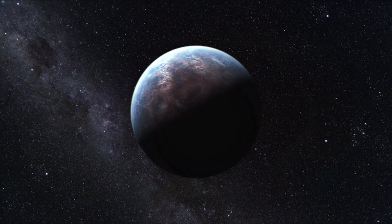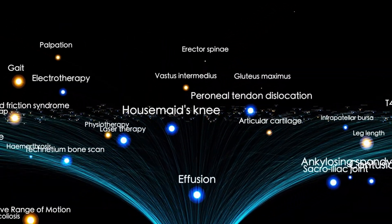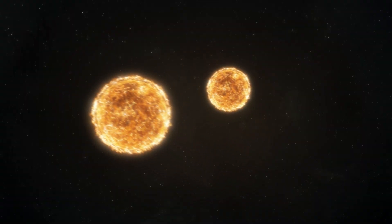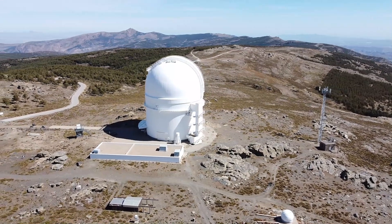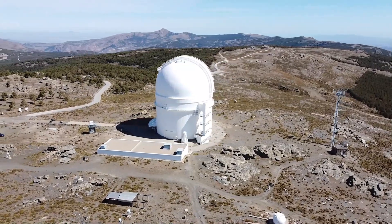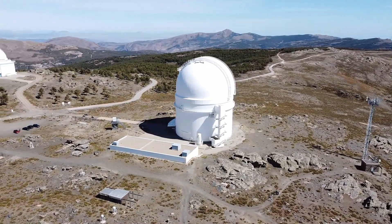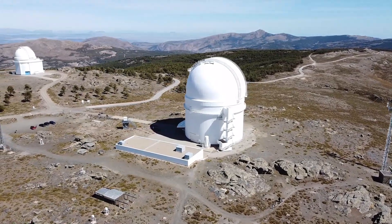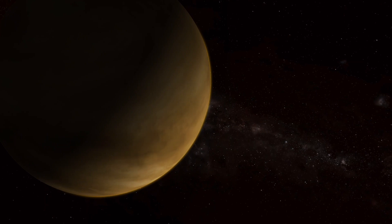But with advancements in technology, direct imaging of exoplanets is now possible. For an exoplanet to be directly imaged, it must be large enough to be seen by the telescope, far enough from its host star not to be obscured by its glare, and young enough to be hot and visible from Earth. These requirements limit the number of exoplanets that can be directly imaged, but they provide a fascinating glimpse into the characteristics and composition of these distant worlds.